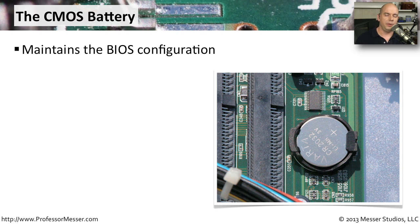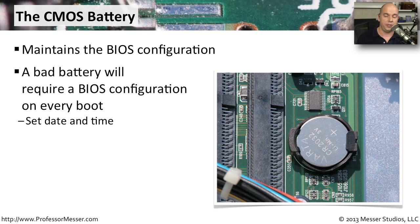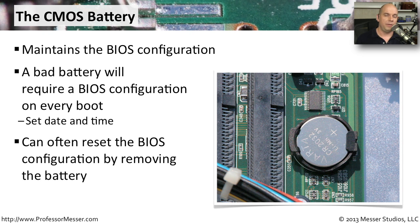If we power off and unplug our computer and then plug it back in and power on, it still knows about the configuration because on your motherboard there is a battery maintaining that BIOS configuration. If the battery goes bad or loses its charge, the configuration of your computer is going to be erased every time you lose power, and it may give prompts saying the configuration is invalid or the date and time is not correct — you may need to replace that battery. If you've made a problematic change to your BIOS and can't get in to reset it, you may want to clear the configuration by removing the battery or setting a jumper on the motherboard. Check your manufacturer's documentation to determine the best way to clear that BIOS configuration.